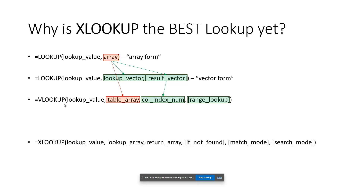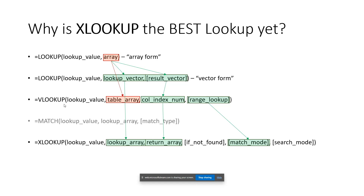XLOOKUP takes all those prior improvements and bakes them into one fancy new best lookup yet. You can separate the lookup column and the return column, designate exactly which column you want the return value from, and your lookup column can be to the left or to the right of the return column. You also have the ability to get an exact match or approximate match, and with the match mode they borrowed the match type from the MATCH function — giving you three options: exact match, next item smaller, or next item greater.